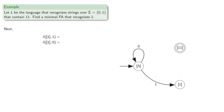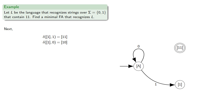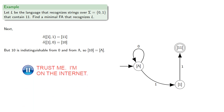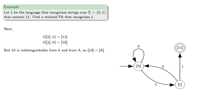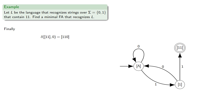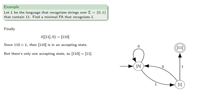Next, delta applied to the equivalence class of 1 when the symbol is 1 will be the equivalence class of 1,1, which is an accepting state. What about delta of equivalence class of 1 with symbol 0? Since 1,0 is indistinguishable from 0 and from lambda, the equivalence class of 1,0 is the same as the equivalence class of lambda. So in our state diagram, if we're at the equivalence class of 1, a 0 will take us to the equivalence class of the empty string. Finally, delta of equivalence class of 1,1 with symbol 0 is the equivalence class of 1,1,0. But since 1,1,0 is in our language, the equivalence class is an accepting state, and there's only one accepting state, so it must be the equivalence class of 1,1. And by a similar argument, delta of equivalence class of 1,1 with symbol 1 is also the equivalence class of 1,1.